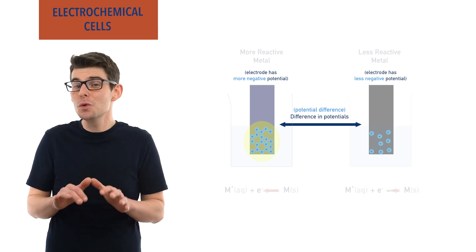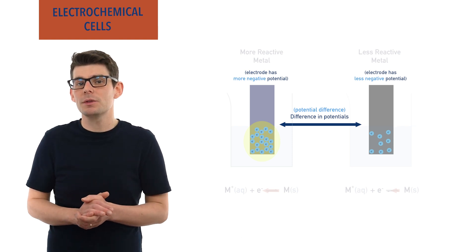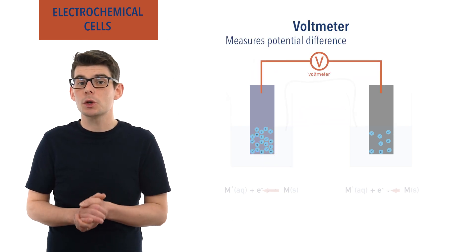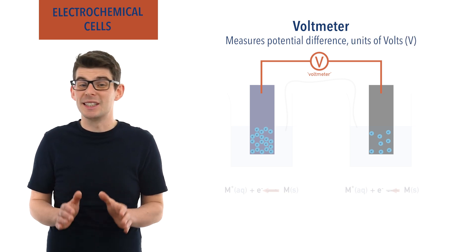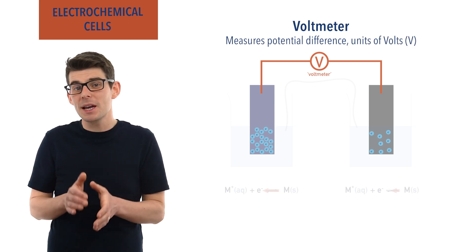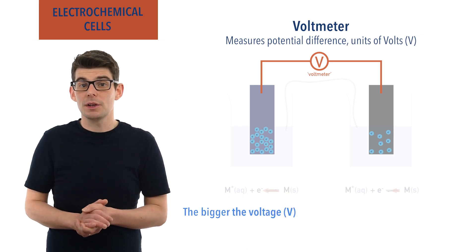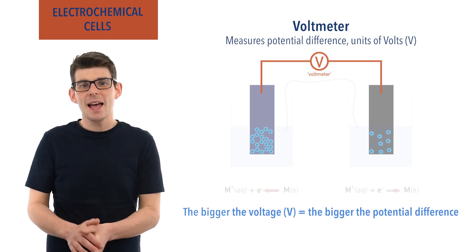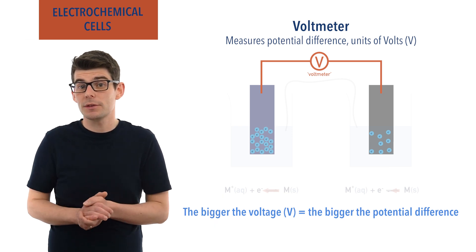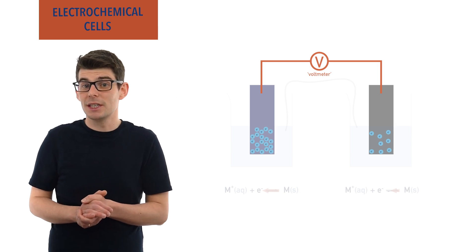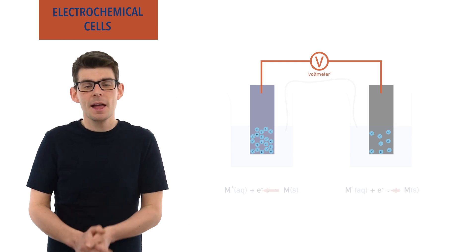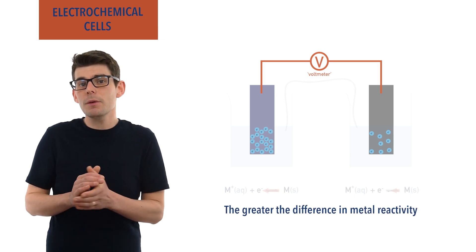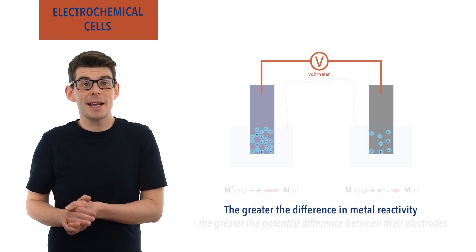If you were to take the two electrodes of two different half cells, they will have a different electrical potential, meaning there would be a potential difference between them. One of the electrodes would have a greater surplus of electrons and therefore be more negative than the other. We can measure potential difference using something called a voltmeter, which records the potential difference in a unit called the volt. The bigger the voltage, the bigger the potential difference. The greater the difference in reactivity of the two metals in the two half cells, the greater the potential difference and voltage between their electrodes.